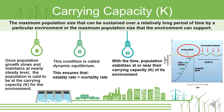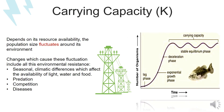The third term, carrying capacity, represented by capital K, refers to the maximum population size that can be sustained over a relatively long period of time by a particular environment. Once population growth slows and maintains a nearly steady level, the population is said to be at the carrying capacity. This condition is called dynamic equilibrium, which ensures that the natality rate equals the mortality rate — that is, birth rate equals death rate — and the population stabilizes at or near the carrying capacity.